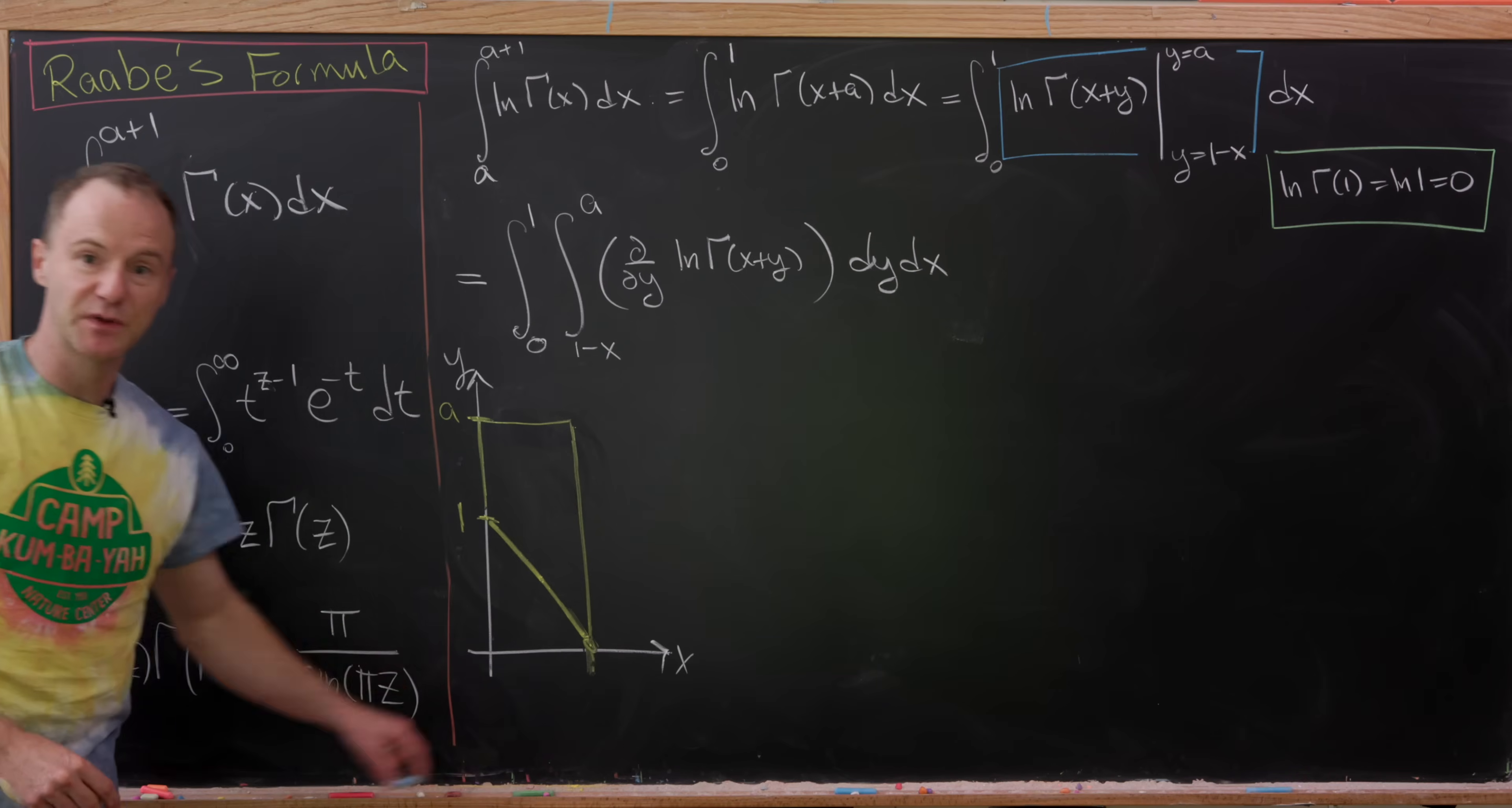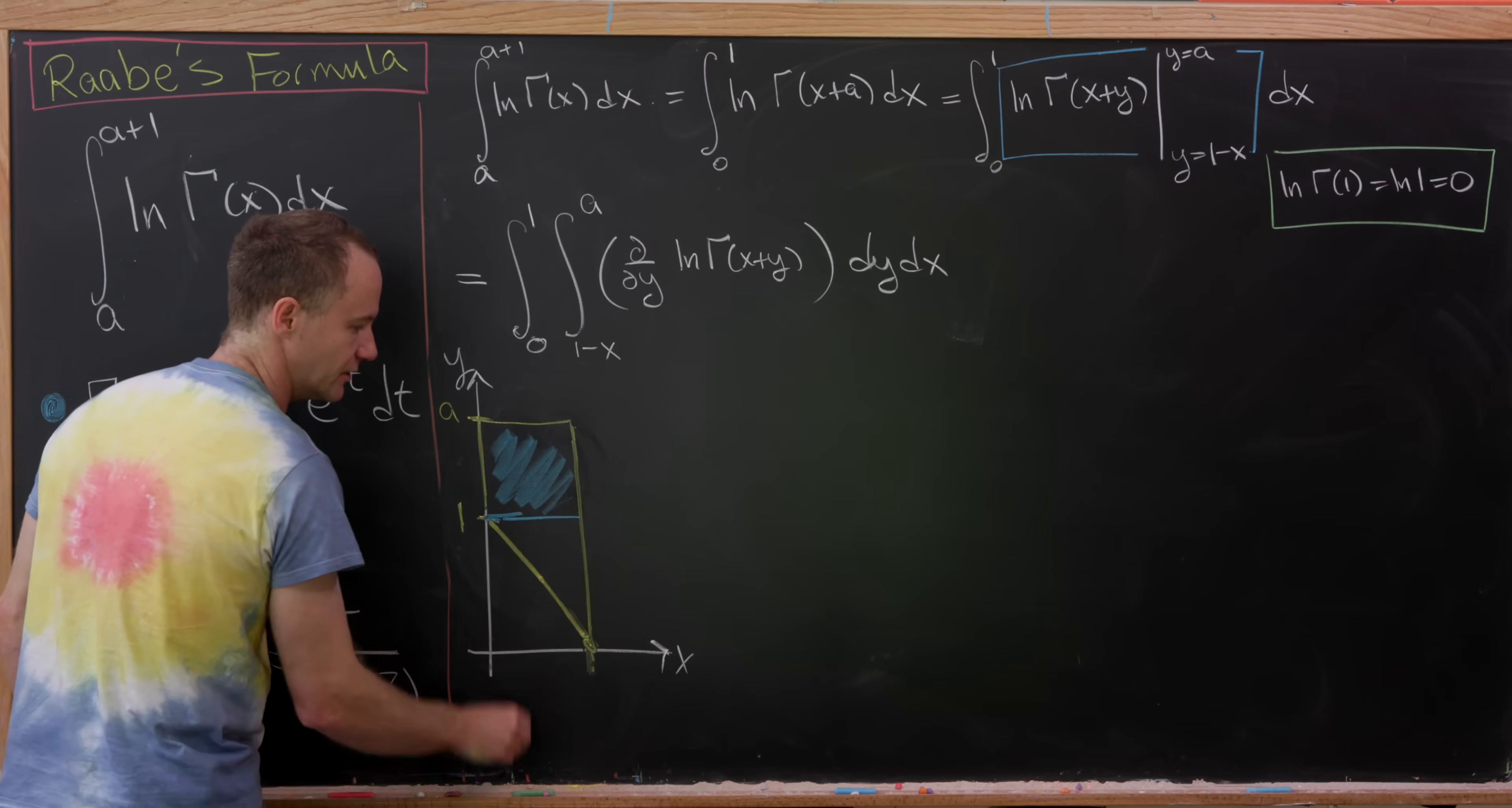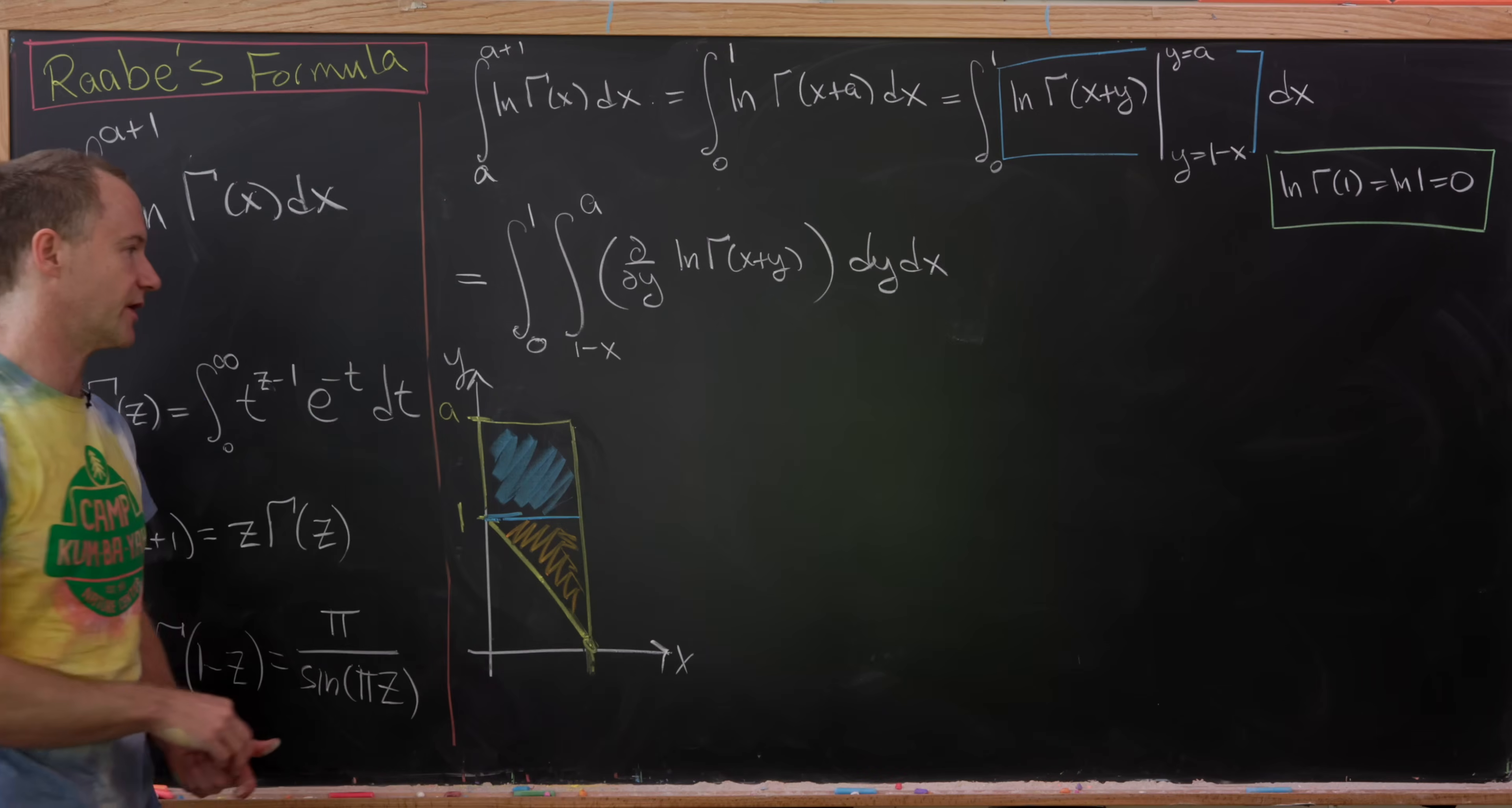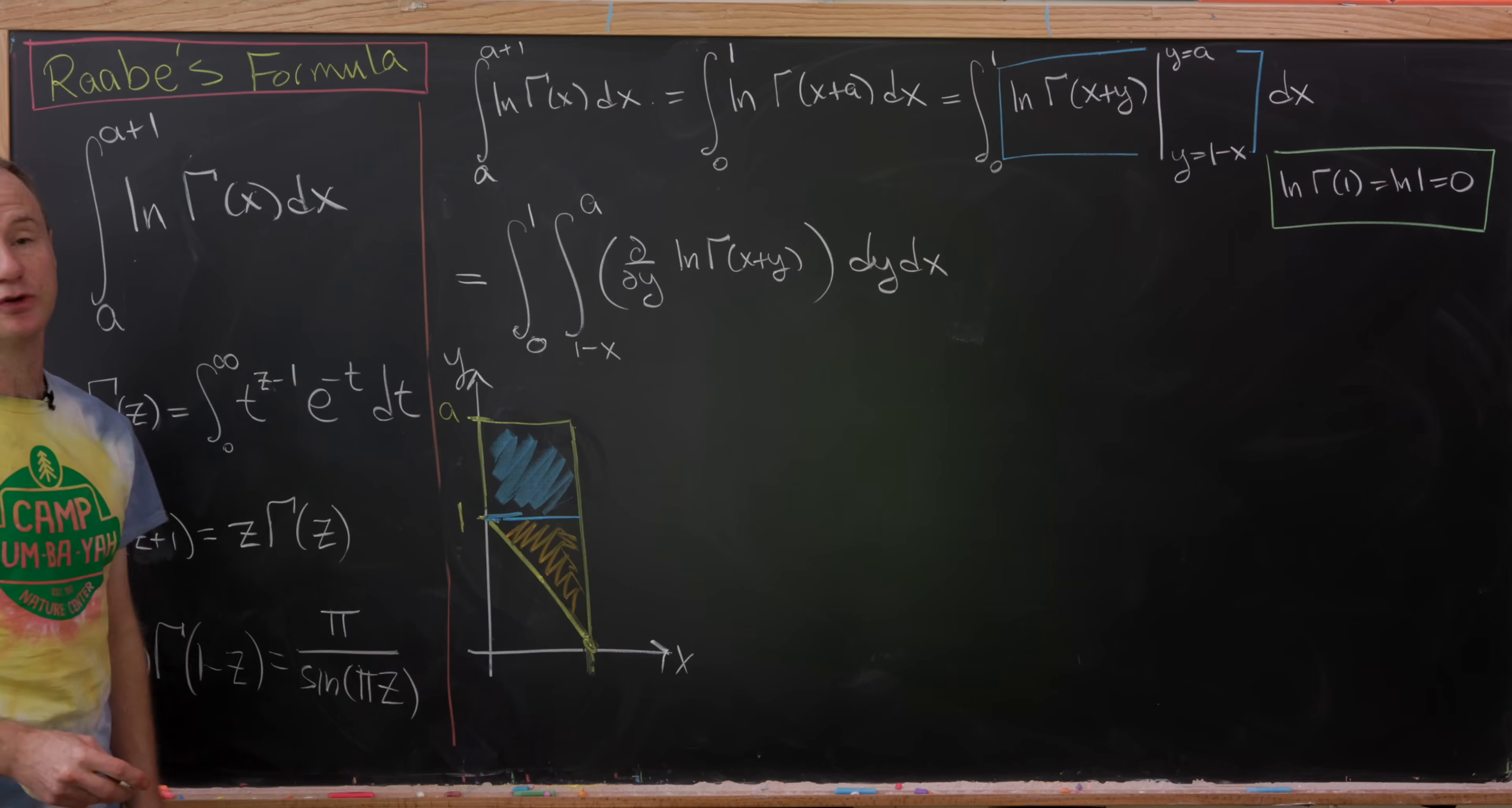Now I'm going to split this into two pieces. I'm going to split it into this upper rectangle, which I'll shade in blue, and then maybe this lower triangle, which I'll shade in orange. And now next up, I'm going to change the order of integration while splitting it up into two pieces based off of this split right here.